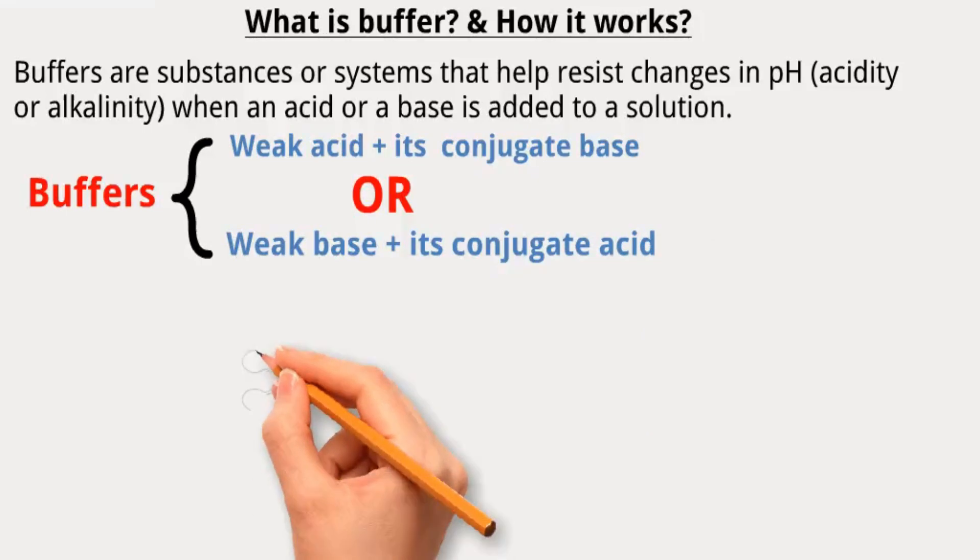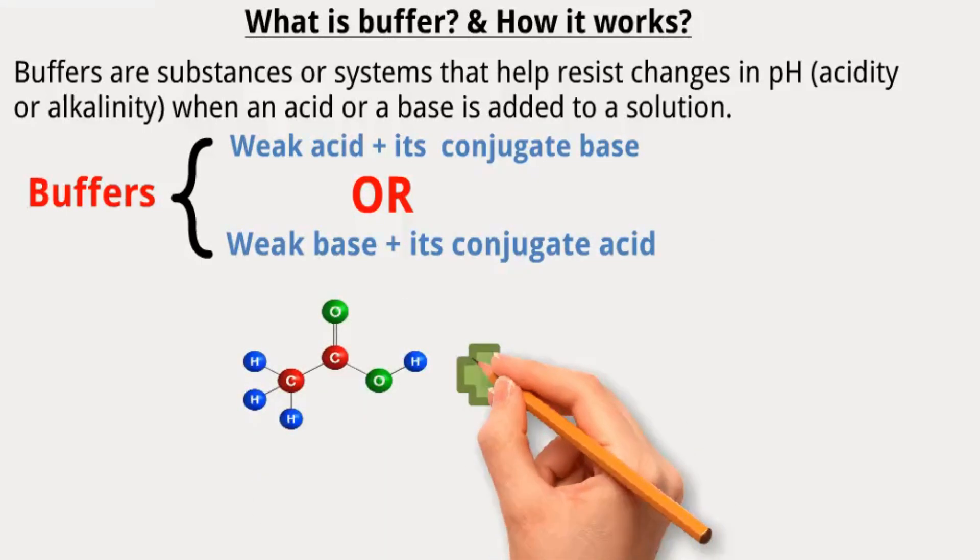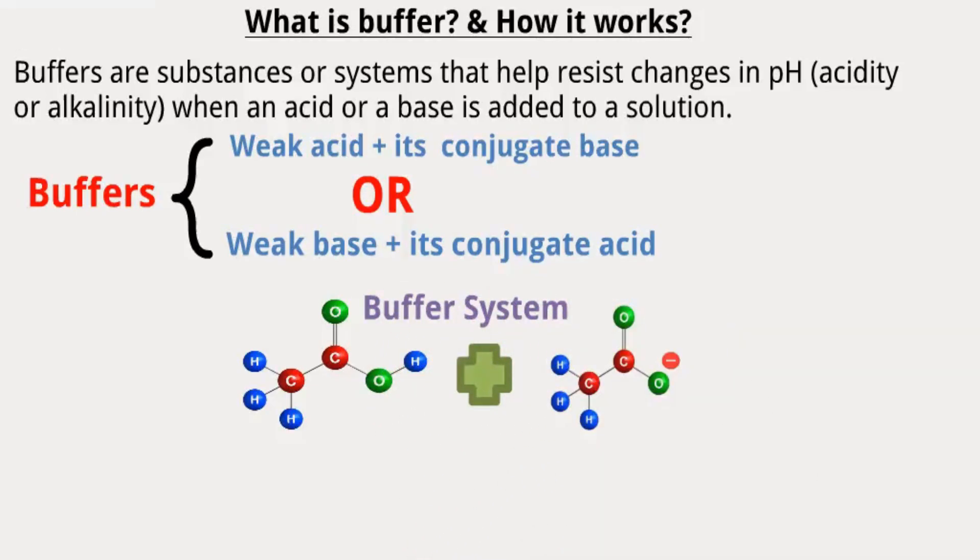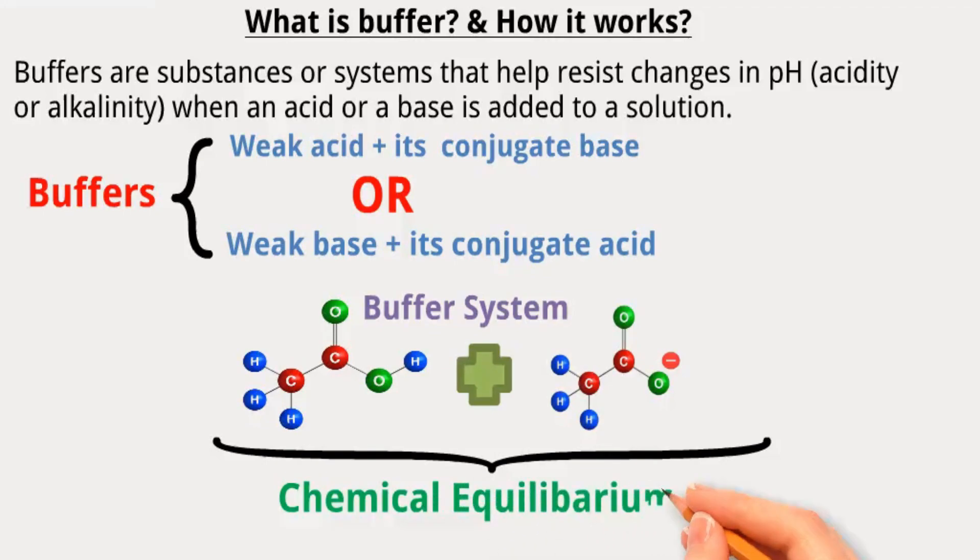For example, acetic acid, which is a weak acid, and acetate ion, which is its conjugate base, form a buffer system. The key is that the acid and its conjugate base, or the base and its conjugate acid, are in chemical equilibrium.